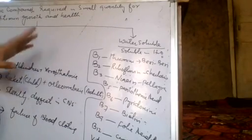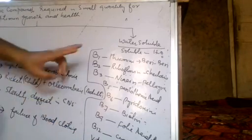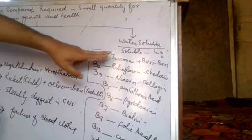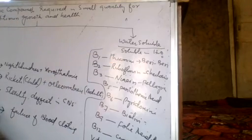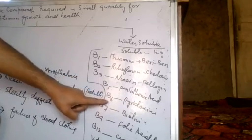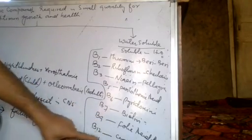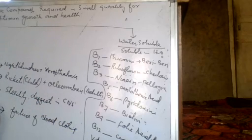First is the B complex and second is vitamin C. B complex includes B1 (thiamine), B2 (riboflavin), B3 (niacin), B5 (pantothenic acid), B6 (pyridoxine), B7 (biotin), B9 (folic acid), B12 (cyanocobalamin), and vitamin C (ascorbic acid).